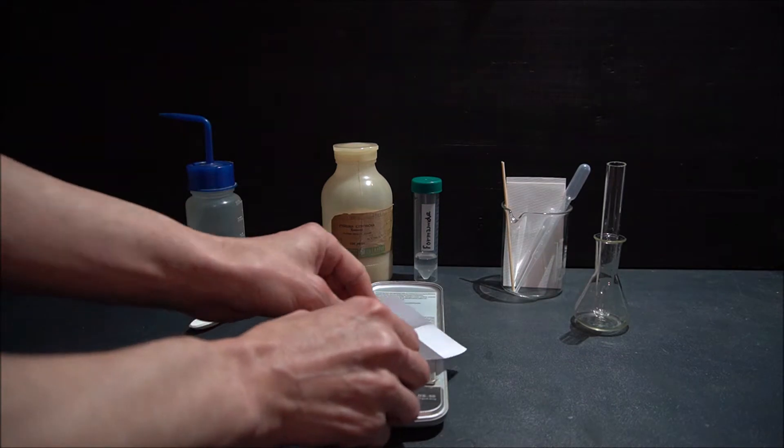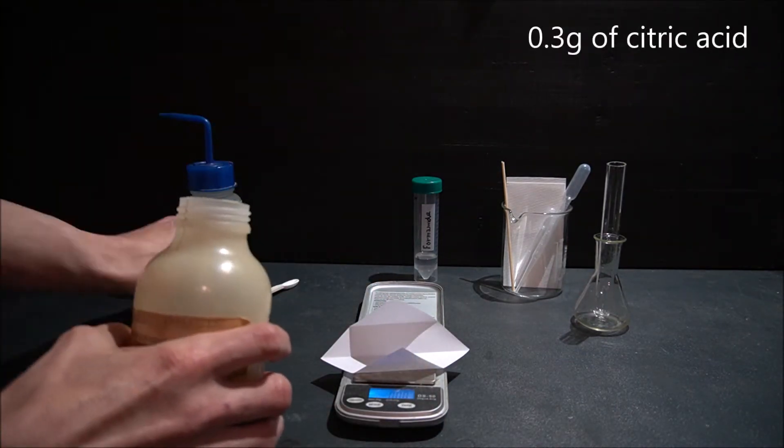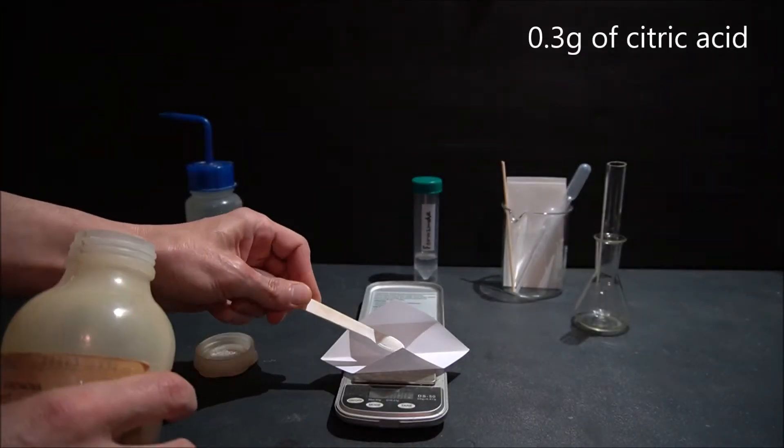First, weigh out about 0.3 grams of citric acid and put it in a glass test tube.